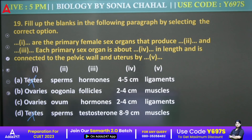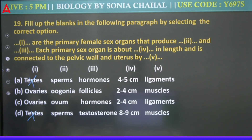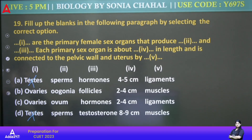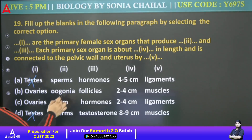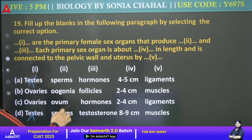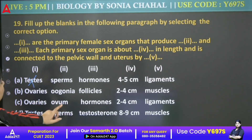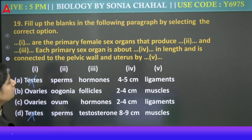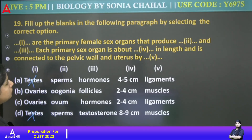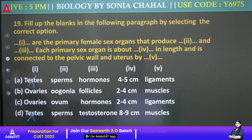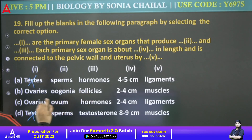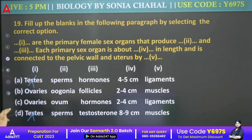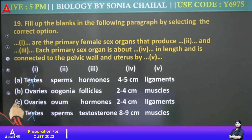That produce dash and dash — it produces oogonia and ovum, and hormones. Follicles or oogonia — both could work, but let's go with C.